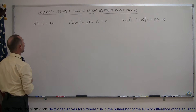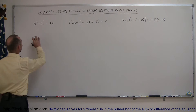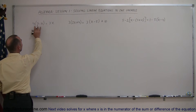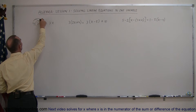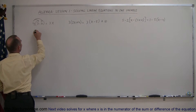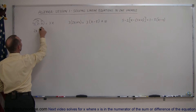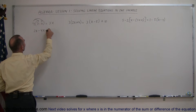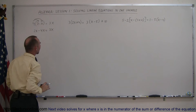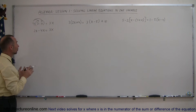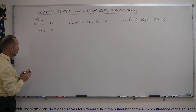Let's look at our first example here. We have 4 times the quantity 7 minus x. We're going to distribute the 4 both on the 7 and the x, so we get 4 times 7 which is 28, and 4 times minus x which is minus 4x, equals 3x. So now we've got rid of the parentheses, and we follow the original steps that we learned before.